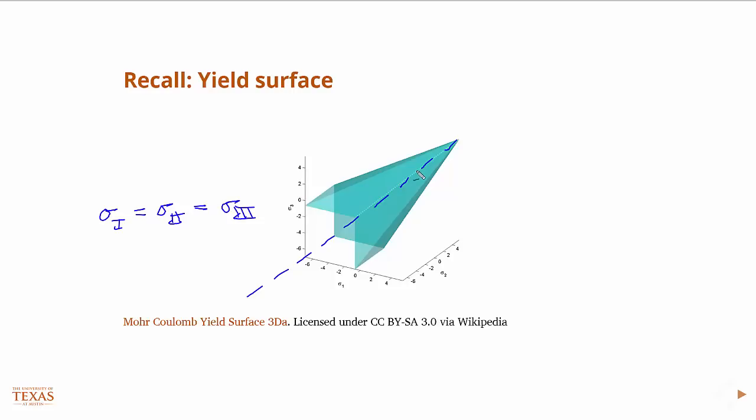If I increase the hydrostatic pressure, that means I'm traveling along this line. If you remember what I said, the state of stress is either inside this surface or on it, can never be outside of it. If it's on it, the material's essentially failed, but if it's inside it, it's elastic.